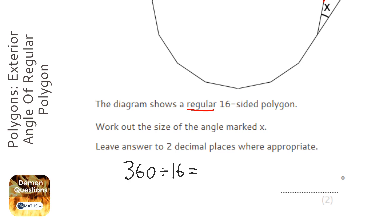And it's 22.5. So we can check that. We can do 22.5 times 16, and it has to add up to 360, which it does.